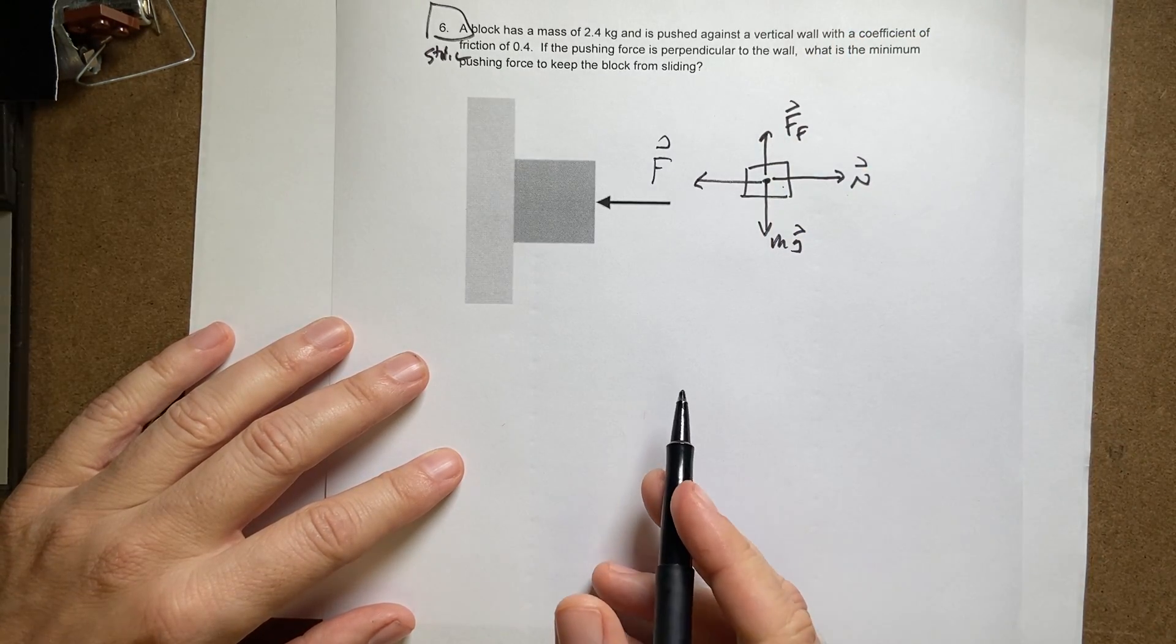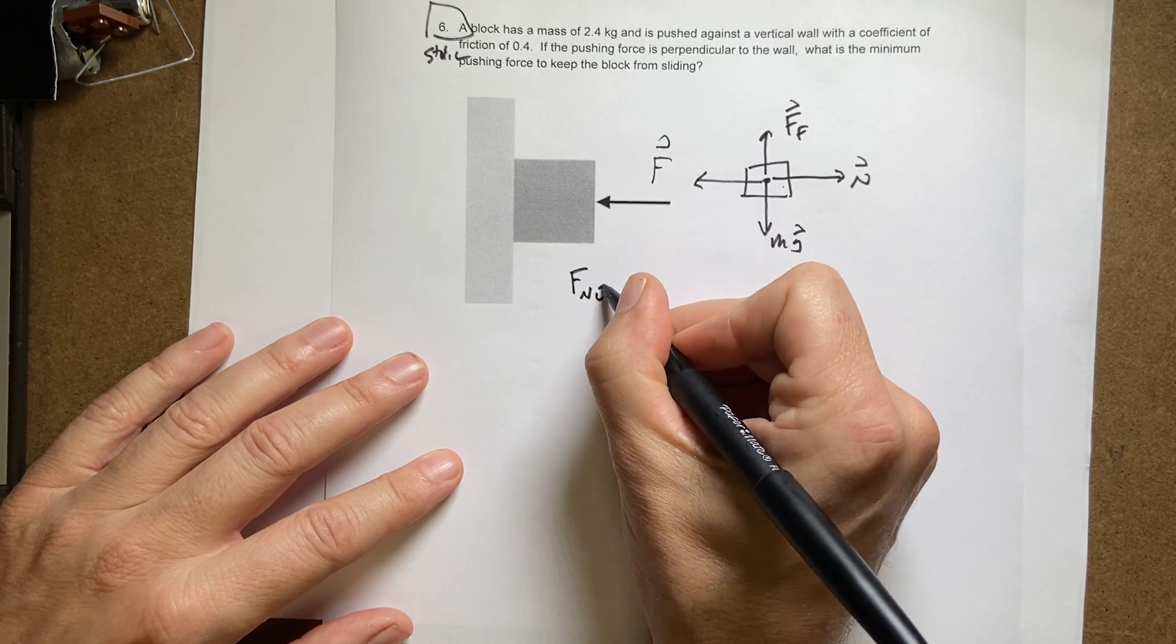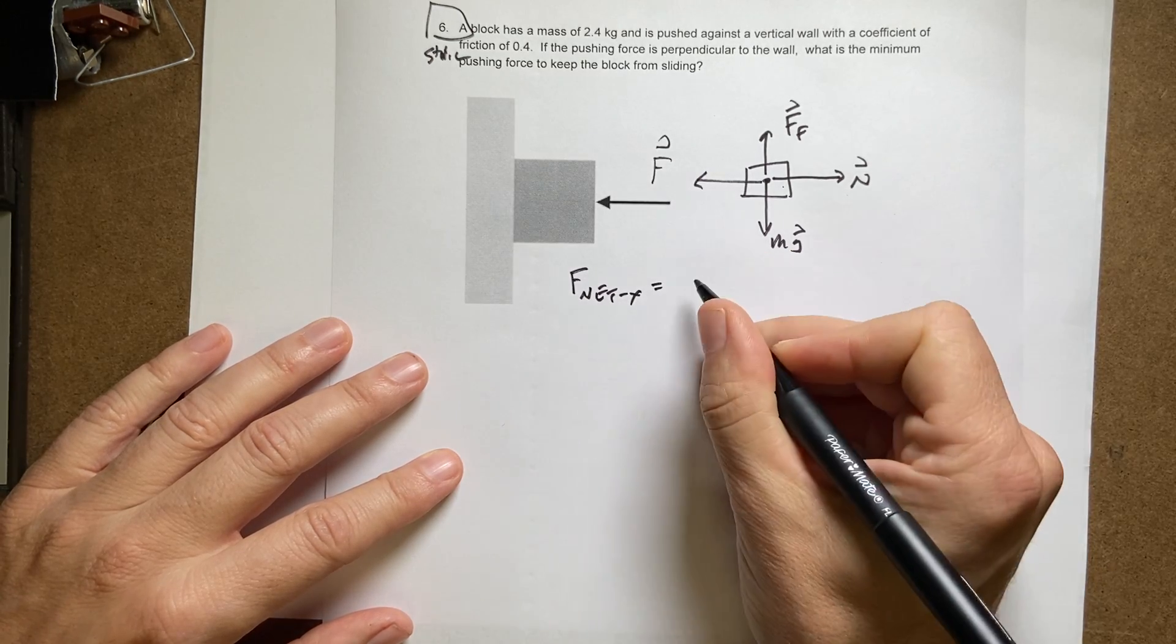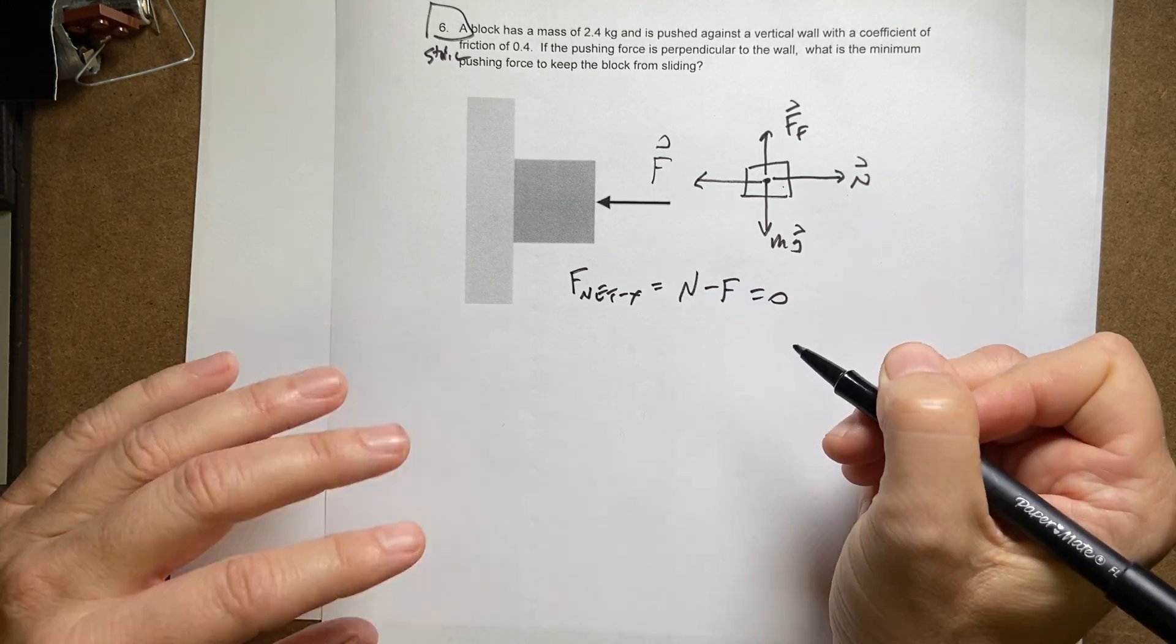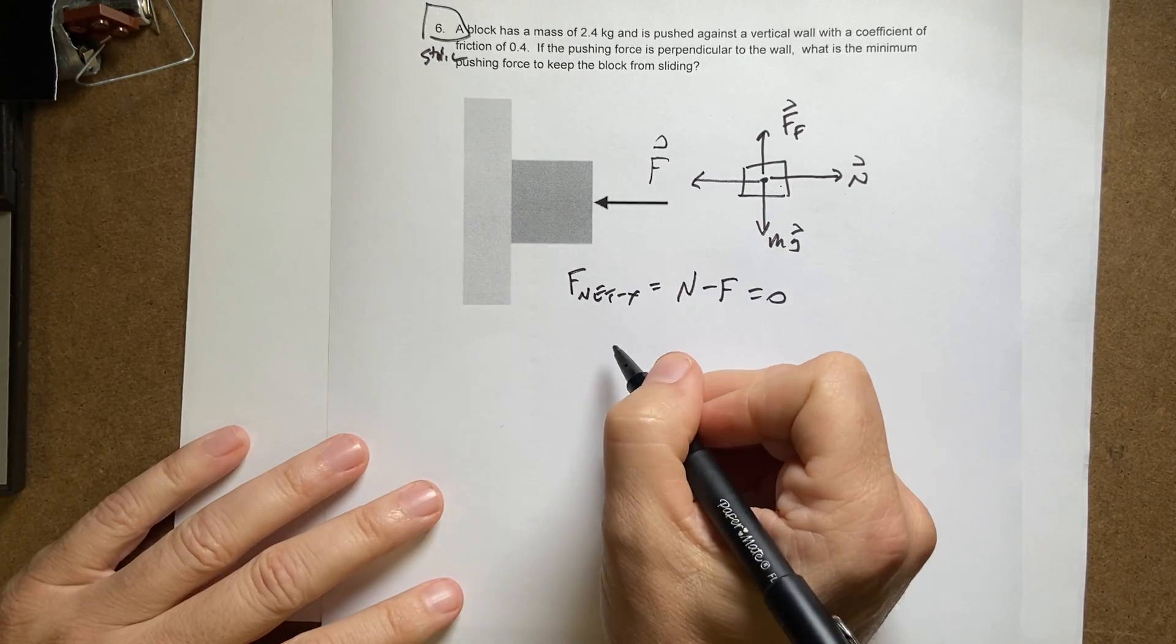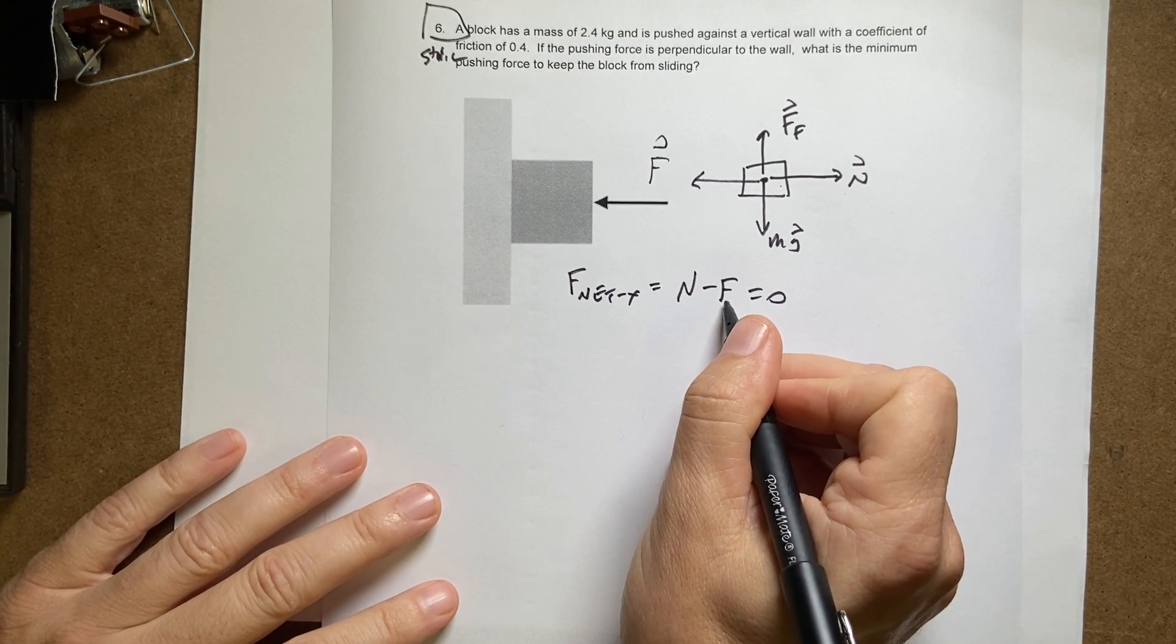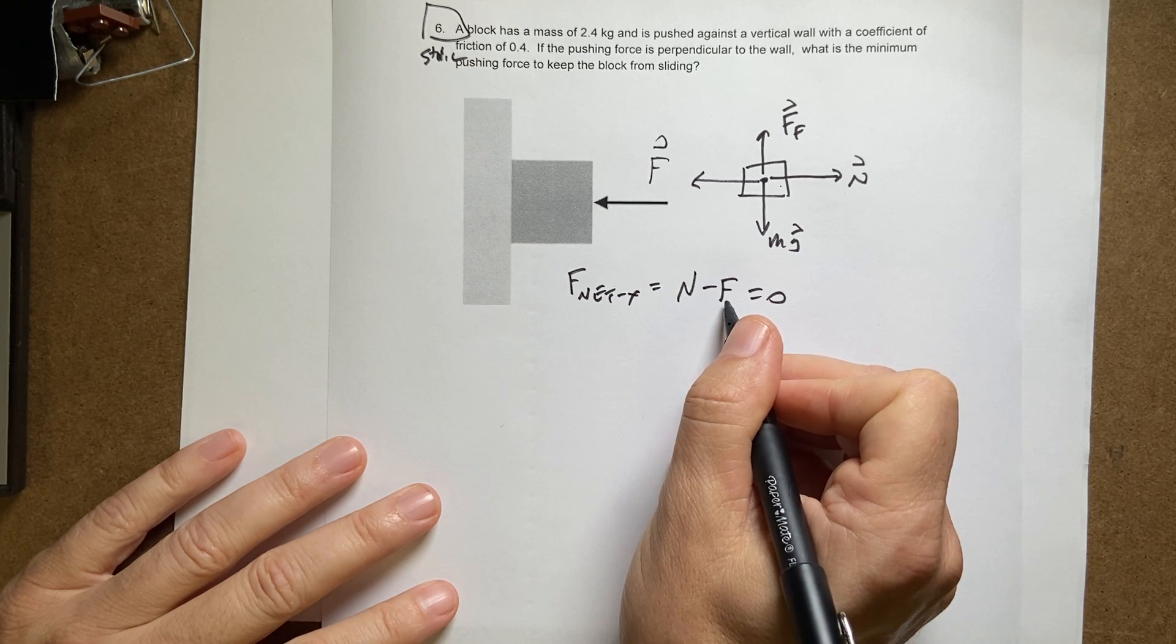Okay, so let's write the sum of the forces. F net X is going to be equal to N minus F equals 0. I don't know N. I don't know F. I'm trying to find F.